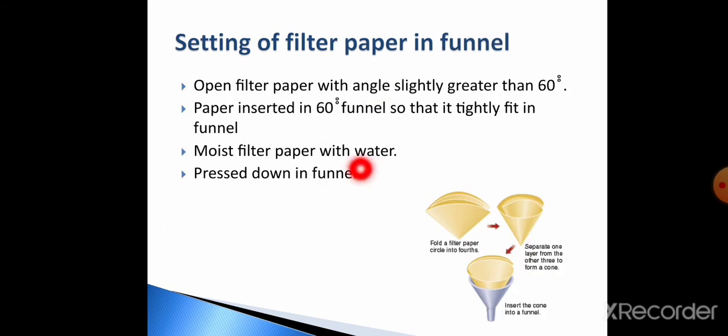Now come to the topic that how we can set a filter paper in a funnel. When filter paper cone is formed, then it is opened with an angle slightly greater than 60 degrees. How we may get this angle? Because when we do second folding along the diameter, then we do unequal folding. After that, when we open the funnel, then the angle is somehow greater than 60 degrees.